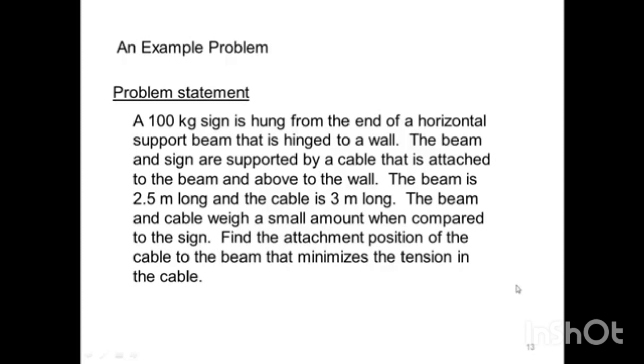Problem statement: A 100 kg sign is hung from the end of a horizontal support beam hinged to a wall. The beam and sign are supported by a cable attached to the beam and above to the wall. The beam is 2.5 meters long, the cable is 3 meters. The beam and cable weigh a small amount compared to the sign. Find the attachment position of the cable to the beam that minimizes the tension in the cable.